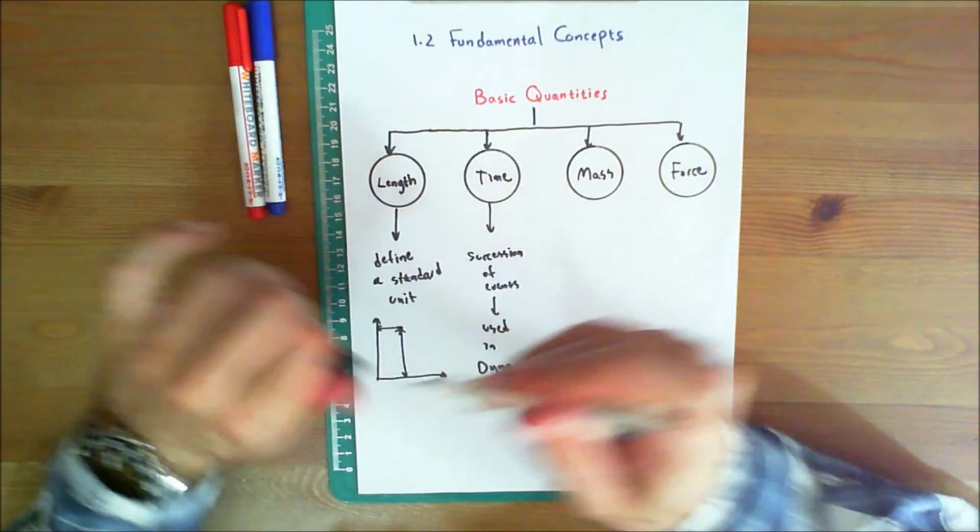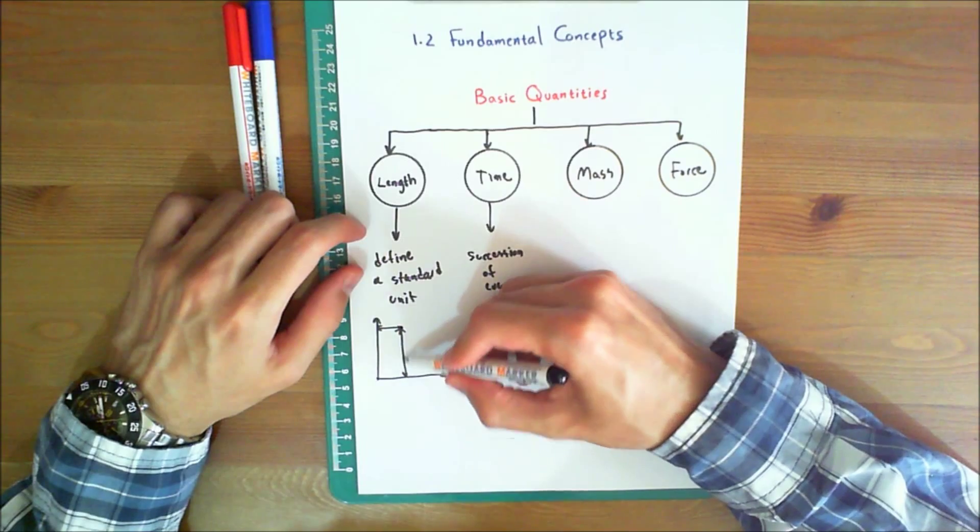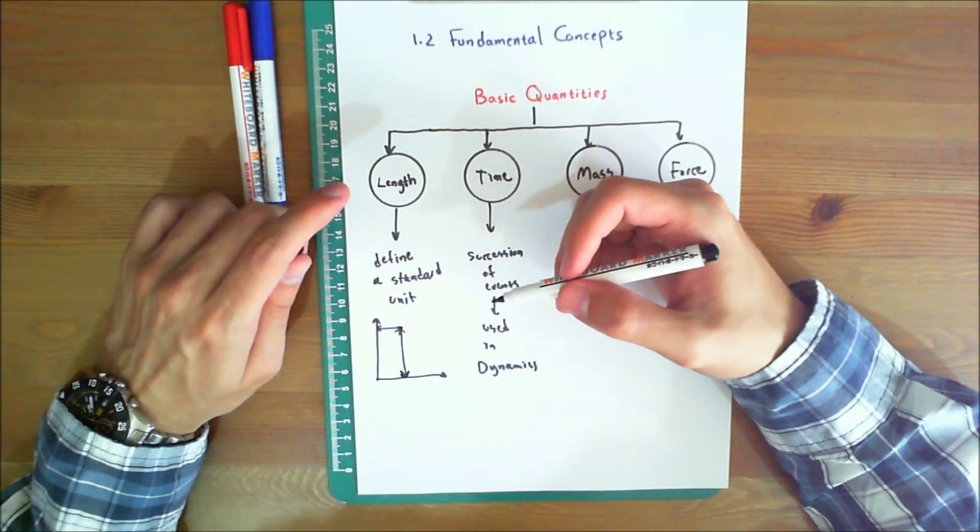one can then quantitatively define distances and geometric properties of a body as multiples of the unit length. So for example, if you've got this point over here, we need the length to define its location.